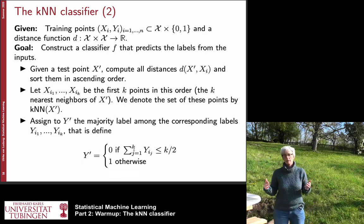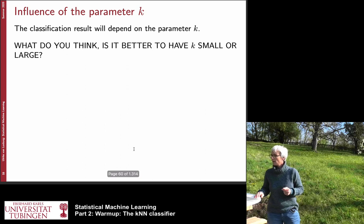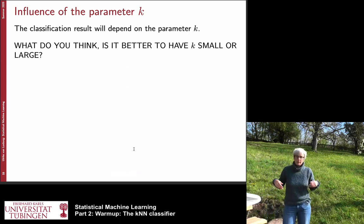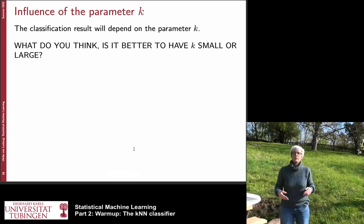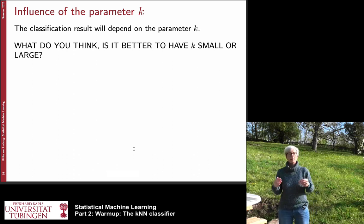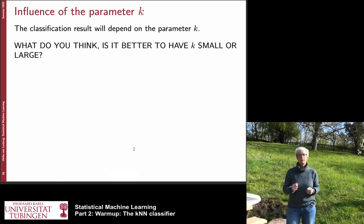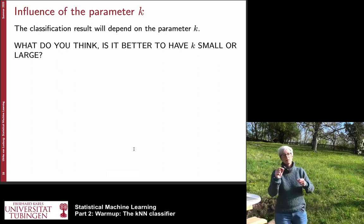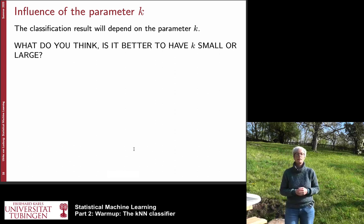Surprisingly, the k-nearest neighbor algorithm doesn't even have a training phase. In most other algorithms, there is a training phase that checks many possible functions to find the best one. The k-nearest neighbor algorithm just needs to look at the data, sort according to distances, and immediately start predicting results for new test points.